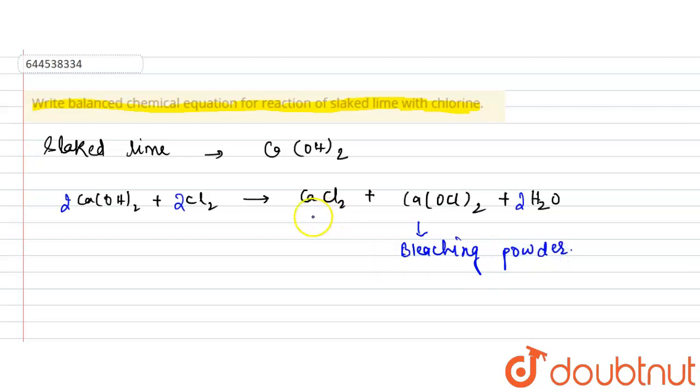This is bleaching powder and this is calcium chloride. So CaCl₂ is calcium chloride, this is bleaching powder. So when this slaked lime reacts with chlorine you get the formation of bleaching powder along with it calcium chloride is formed. This is our answer. I hope you have understood, thank you very much.